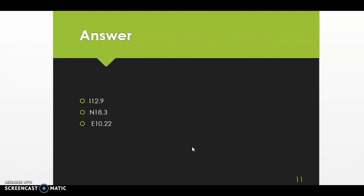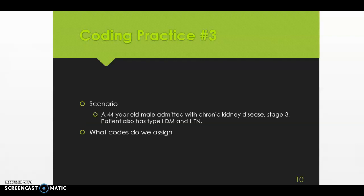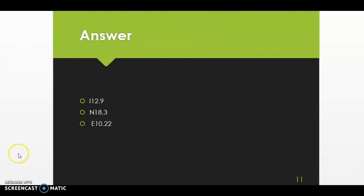Make sure there's not any includes or excludes notes, which there's not. So our three codes for this scenario, the three codes are that I12.9, N18.3, and E10.22. I hope you guys enjoyed going through some short scenarios and reviewing digestive and genital urinary coding guidelines.